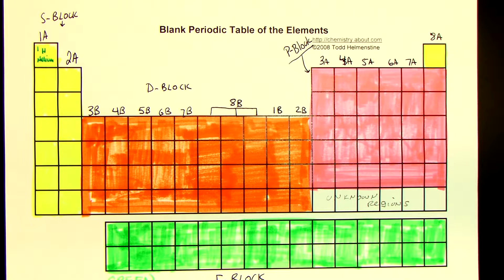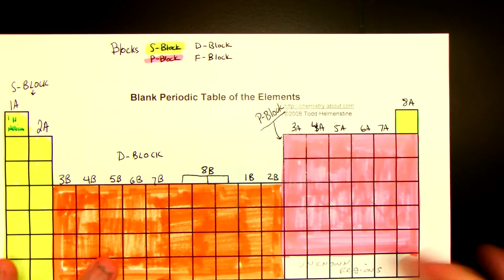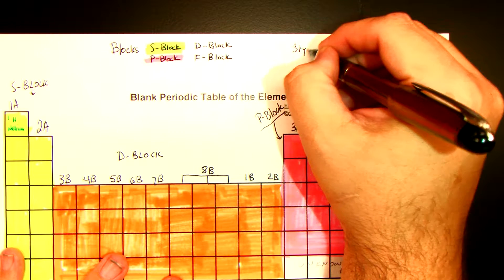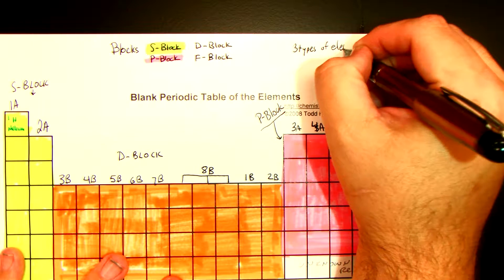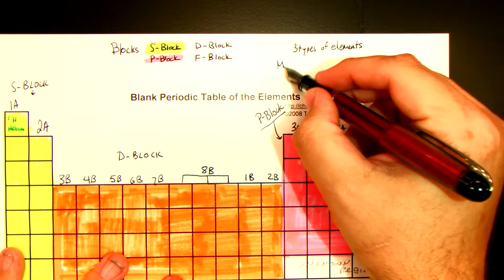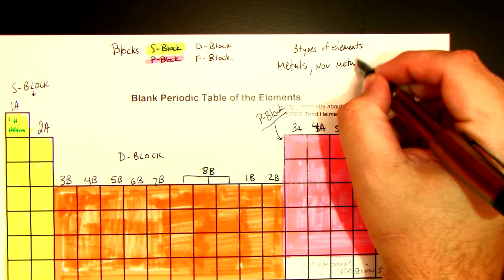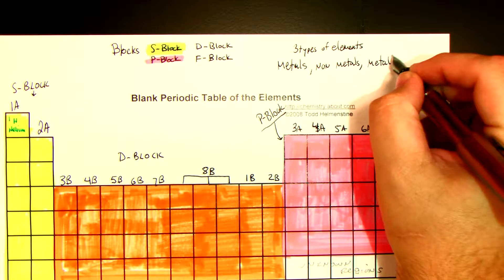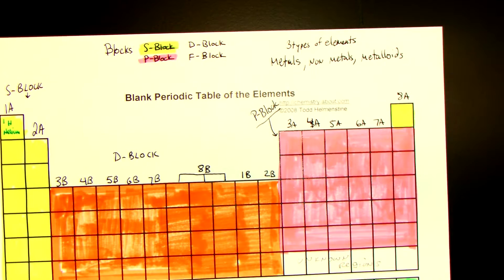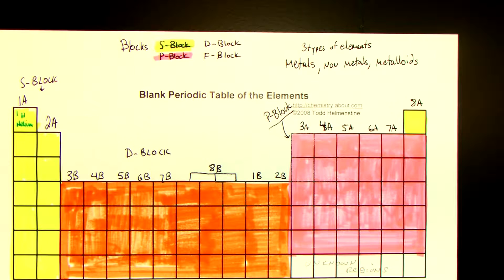Now that we have the blocks color-coded, we're going to add in some different ideas. The first big idea is basically there are three types of elements: metals, non-metals, and metalloids. Metals have certain characteristics, non-metals have certain characteristics, and metalloids are the ones that are in between.